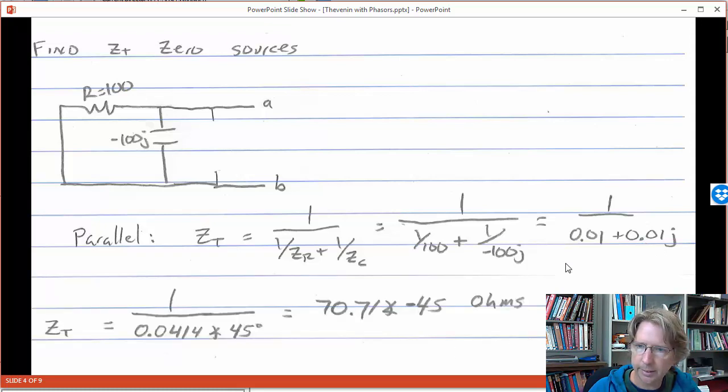And finally we put this into phasor form, polar form. We have an amplitude and a phase and we can divide the amplitudes for the final amplitude and subtract the phases, 45 from the phase of 0 at the top and we get negative 45 degrees. So that was step one, finding the equivalent impedance, the Thevenin impedance.